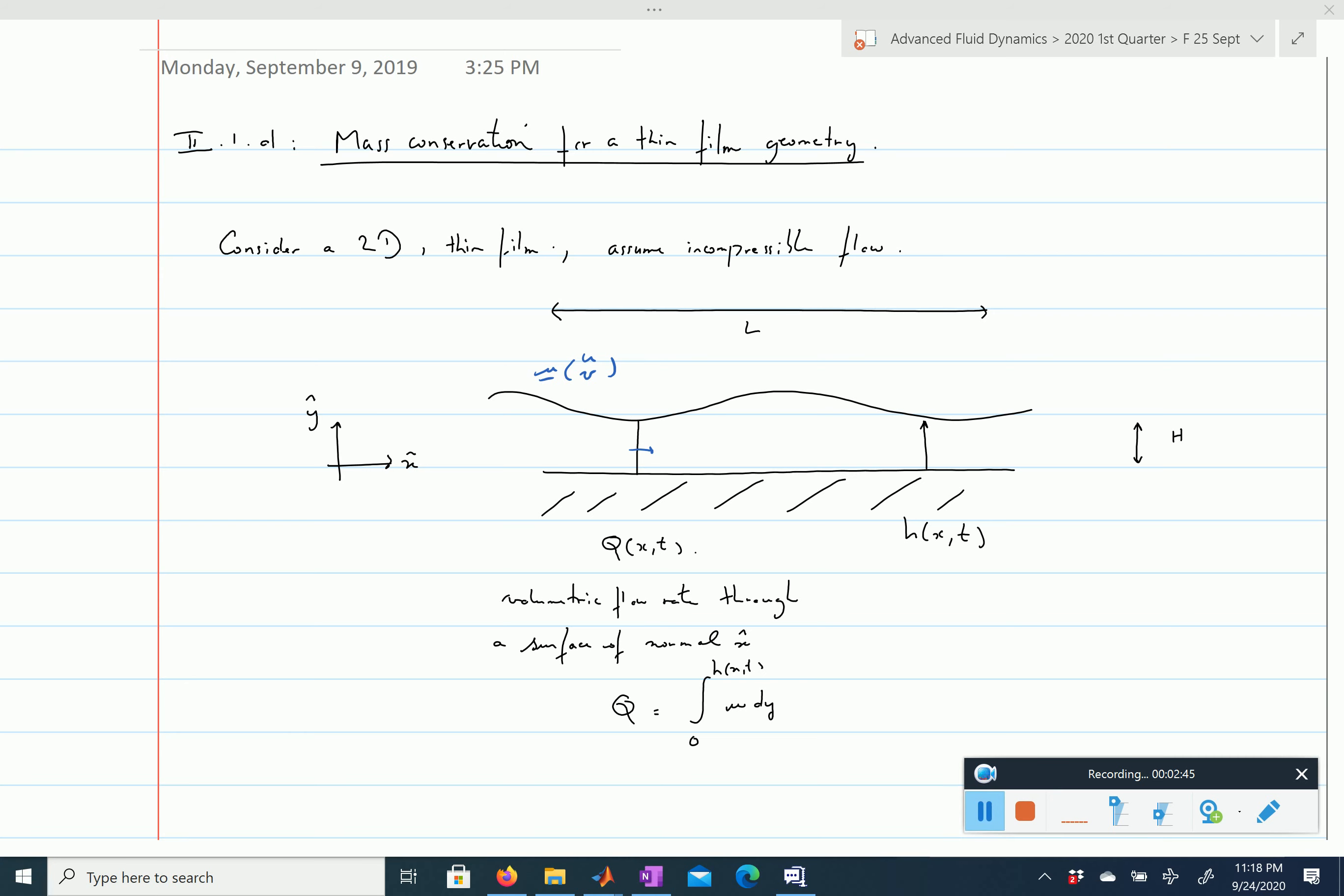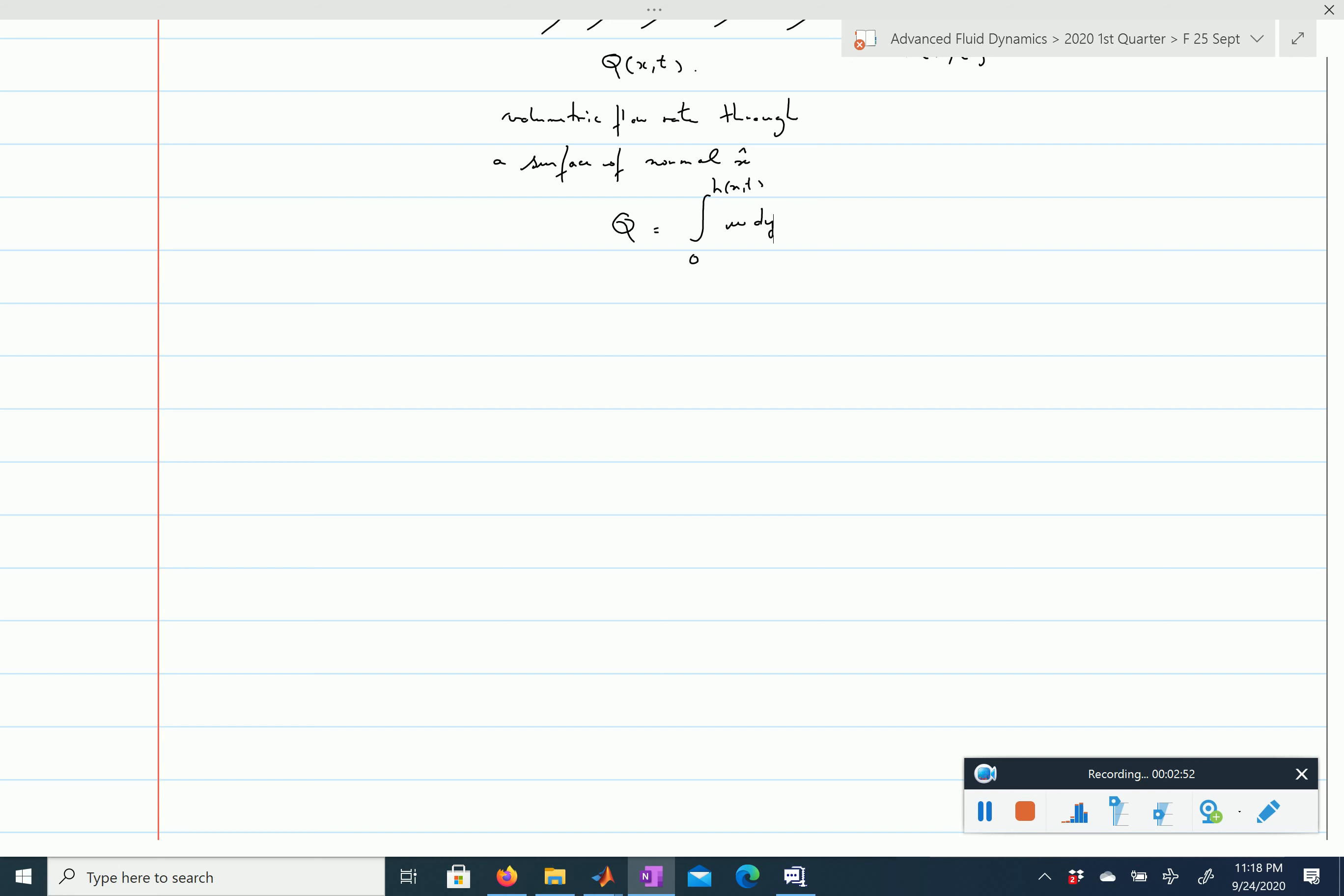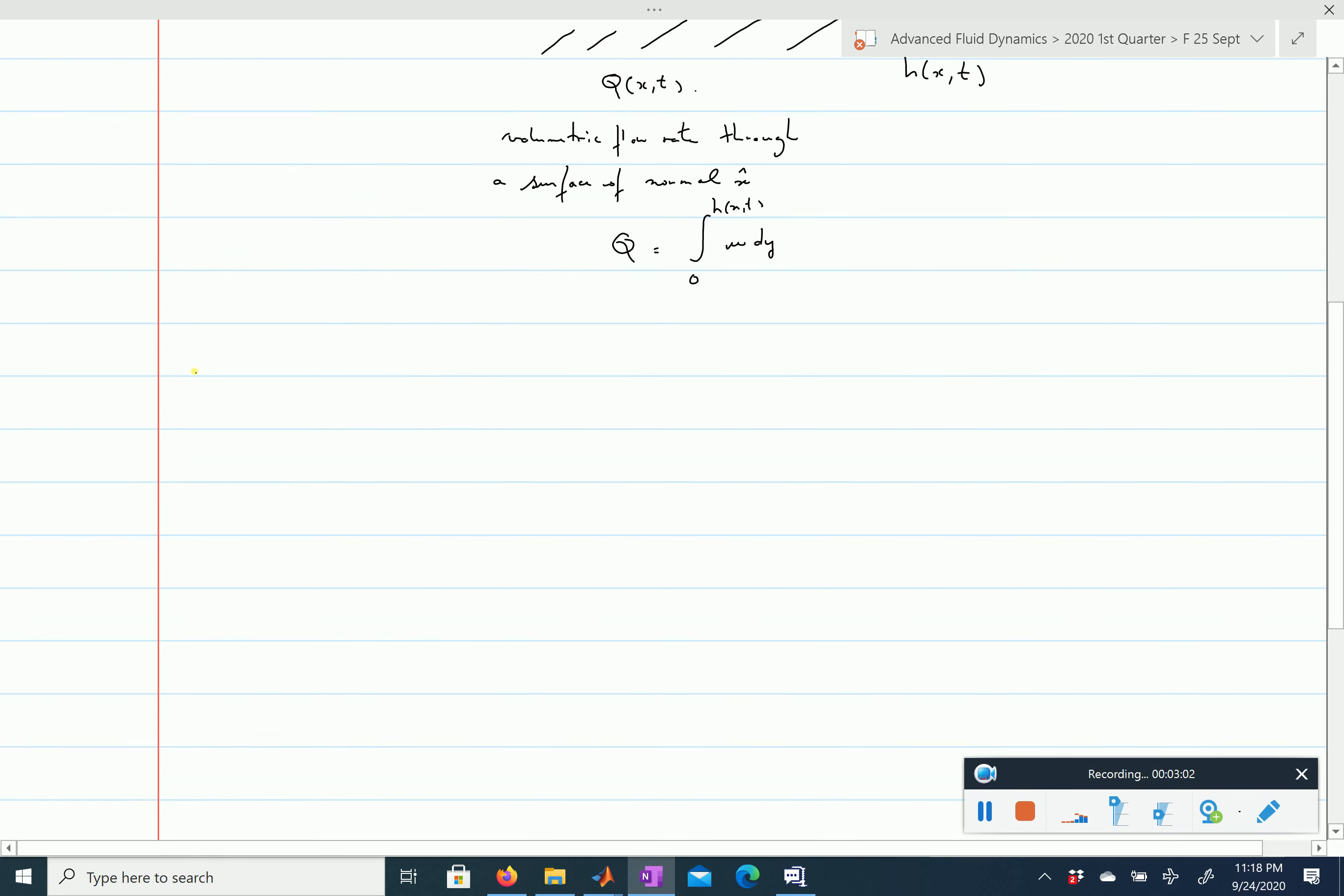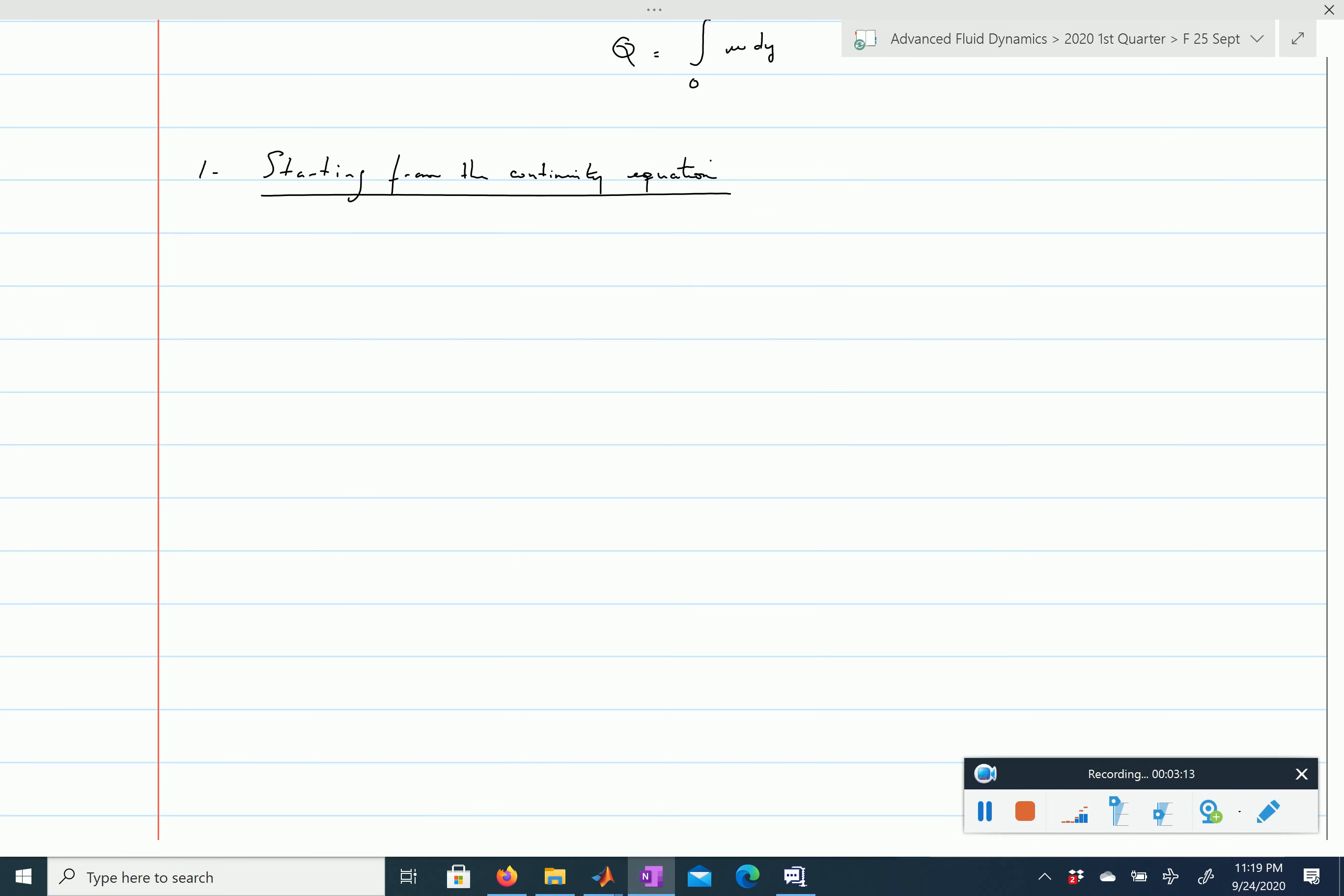There are different ways to write a mass conservation statement for this geometry. One is to start with the continuity equation; the other is to reason on a control volume. Here I'll start from the differential level, from the continuity equation. Sometimes it's easier to reason at the control volume level because starting at the differential level usually involves more calculation. We start from ∇·u = 0.